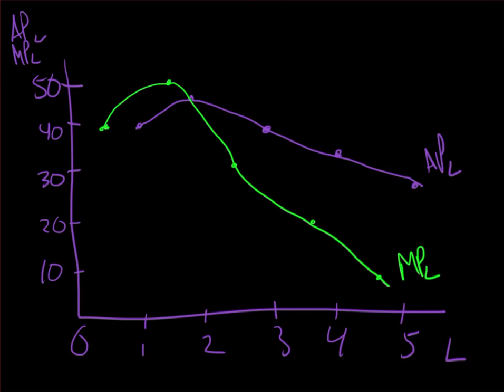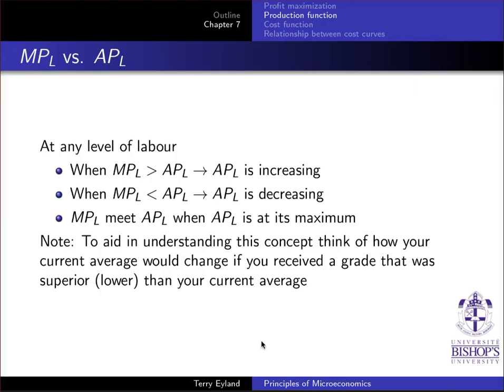So this is not just by chance that it's crossing at its top section of APL. It actually always will be the case. So let's try to understand why. And we're going to come back to this graph. For the previous graph and many other graphs, we will have this relationship which states that at any level of labor, when marginal productivity is greater than the average productivity, therefore the average productivity must be increasing.